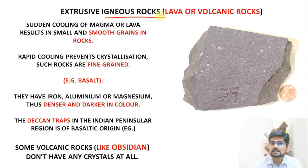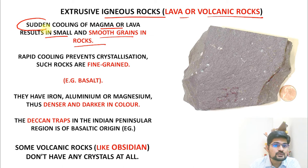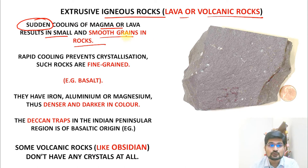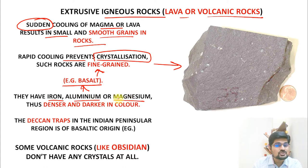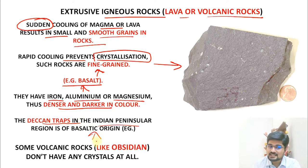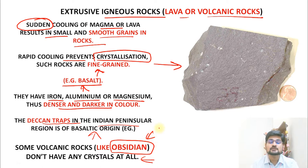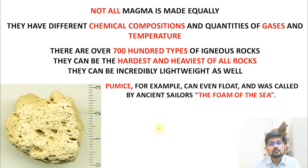Extrusive igneous rocks are lava or volcanic rocks. Sudden rapid cooling of magma or lava results in small and smooth grains, preventing crystallization — these are fine-grained rocks. Basalt is an example, a dark rock with heavier elements like iron, aluminium, and magnesium, making it denser and darker in color. The Deccan Trap region in India's peninsular area has this basaltic origin. Some volcanic rocks like obsidian have no crystals at all.